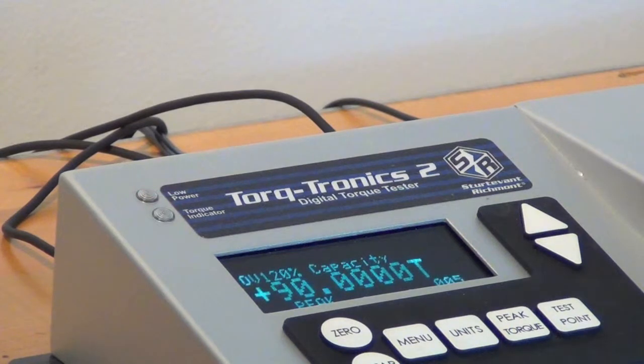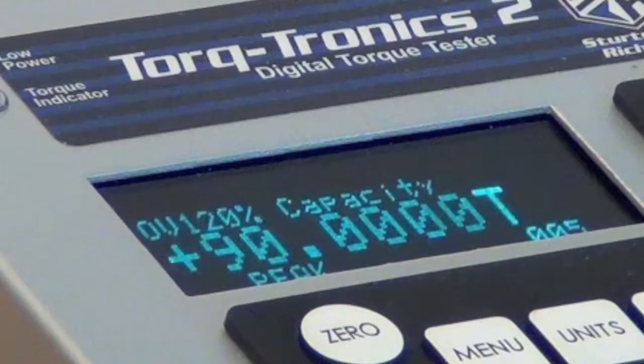That flashing red light is intended to catch your eye, even if you're across the room. That flashing red light wants you to look at something. See the top of the easy-to-read vacuum fluorescent display? It says OV 120% capacity.